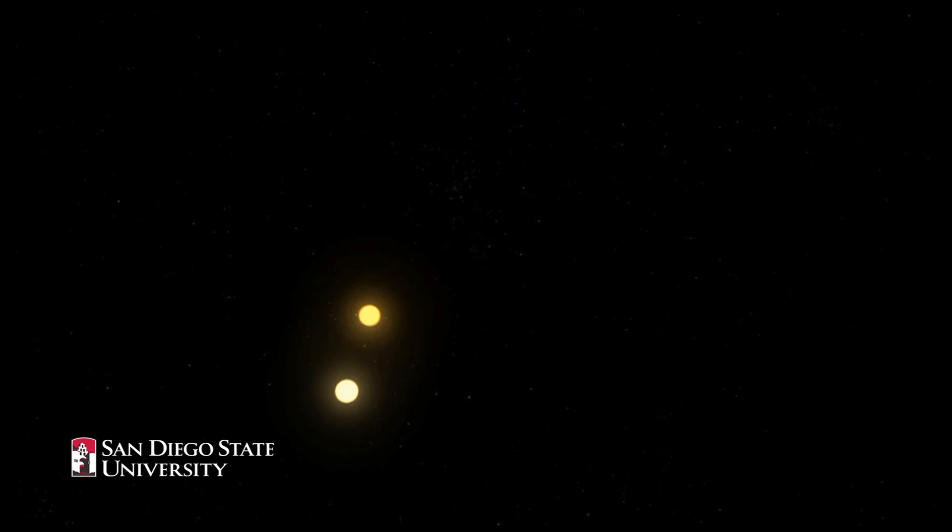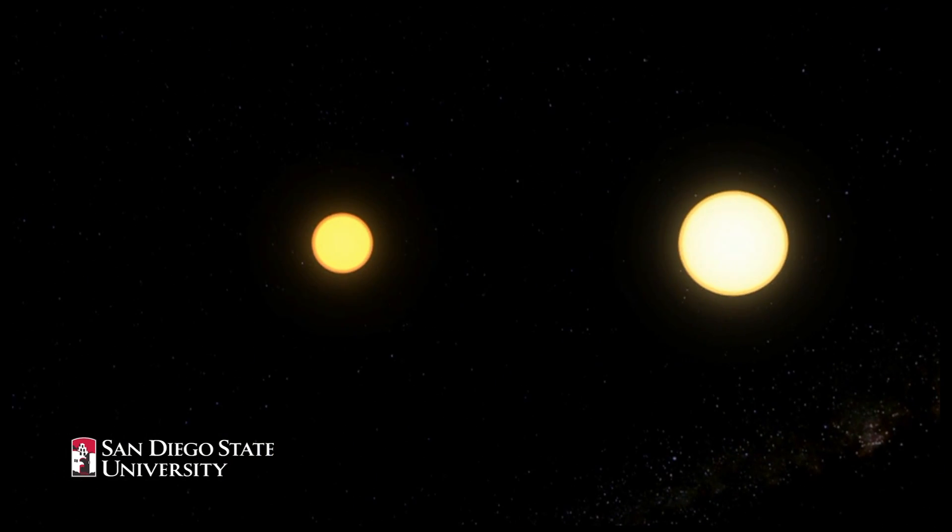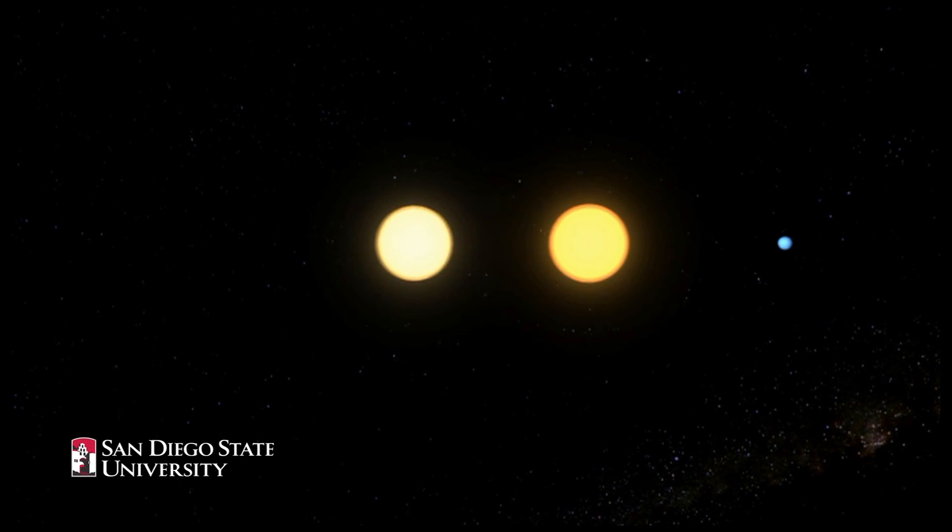Around the pair, the planet orbits. Now we're going to zoom back down to the plane of the orbit, and we see the planet go behind the stars in the background.